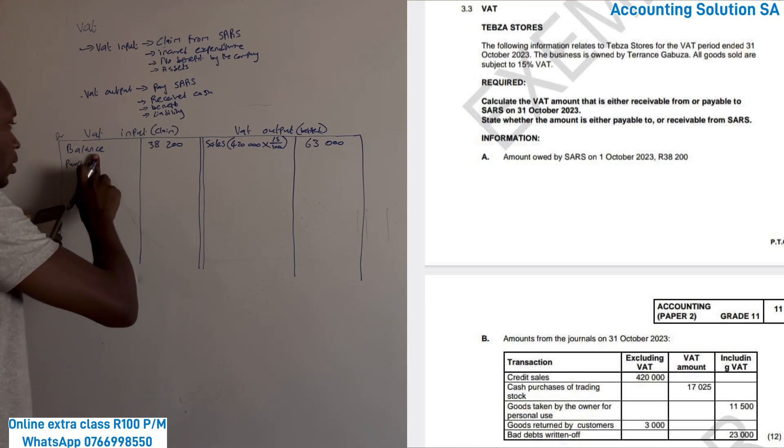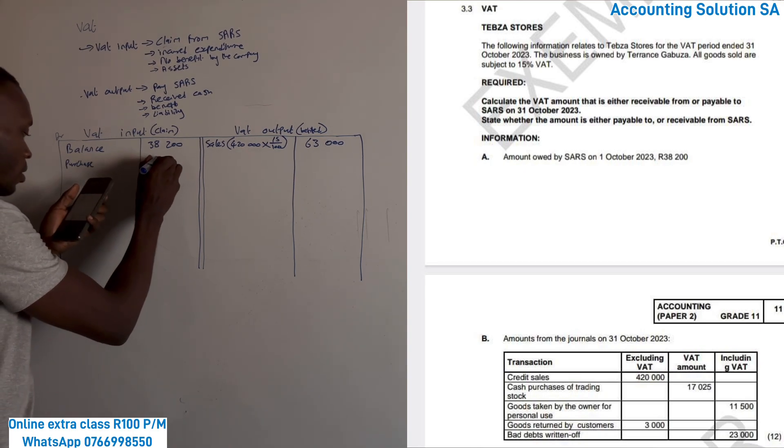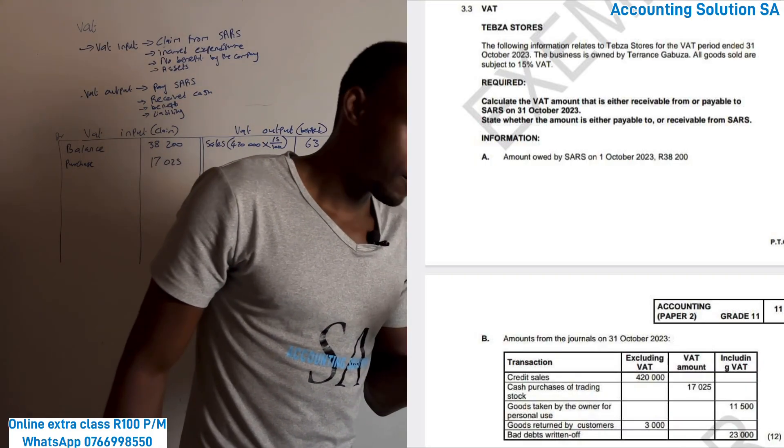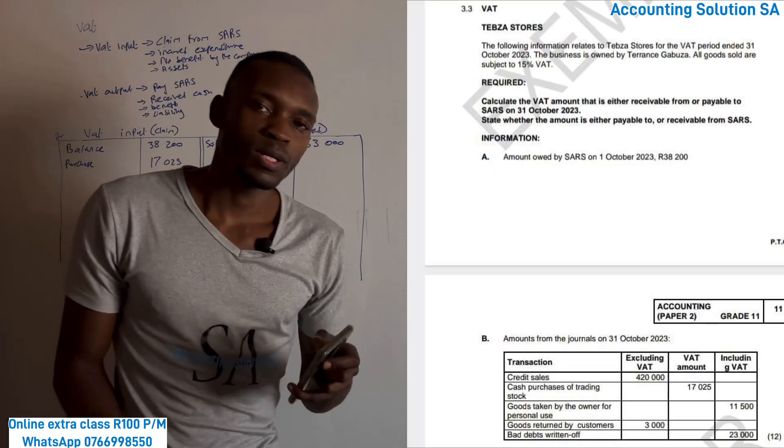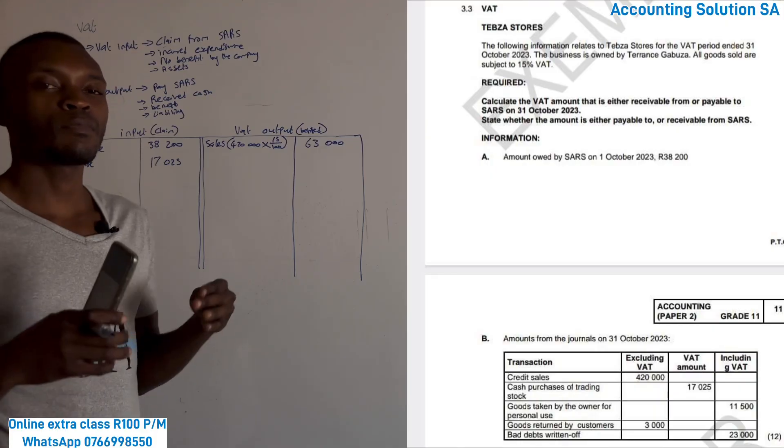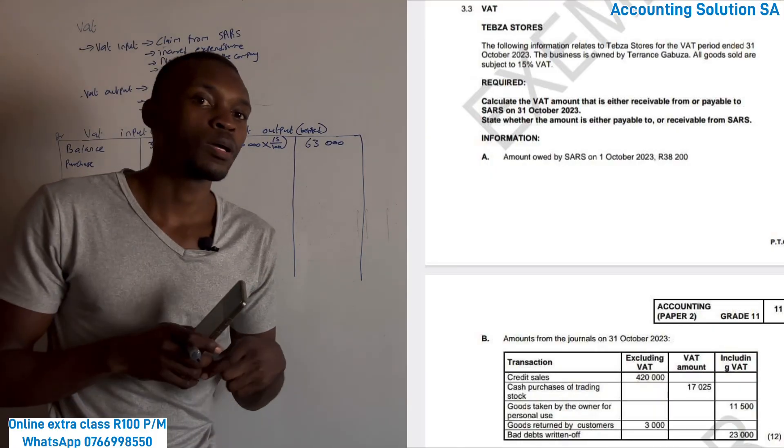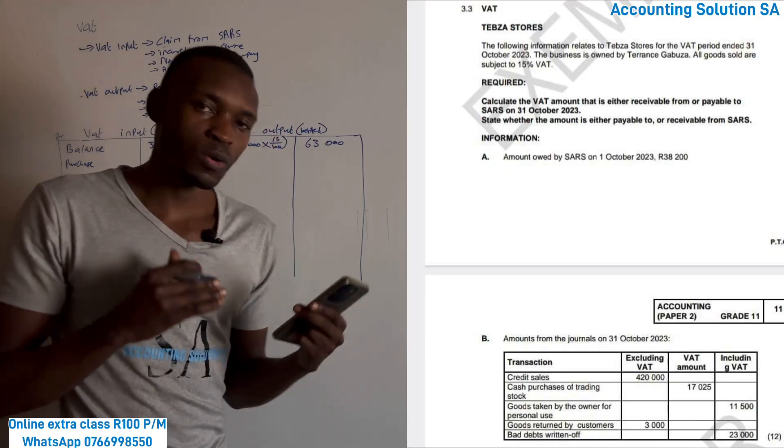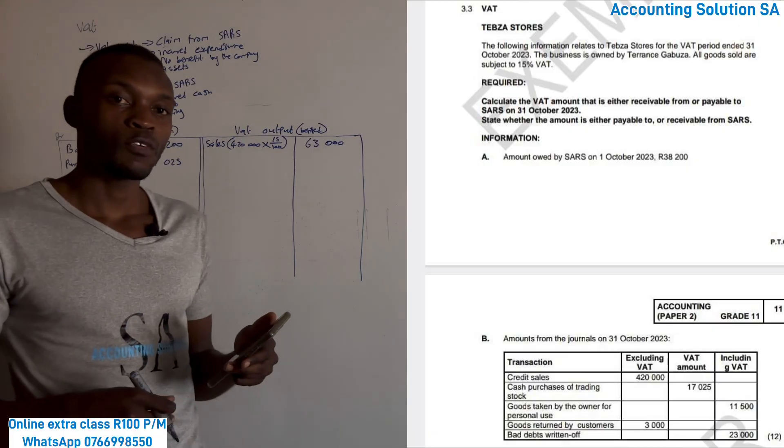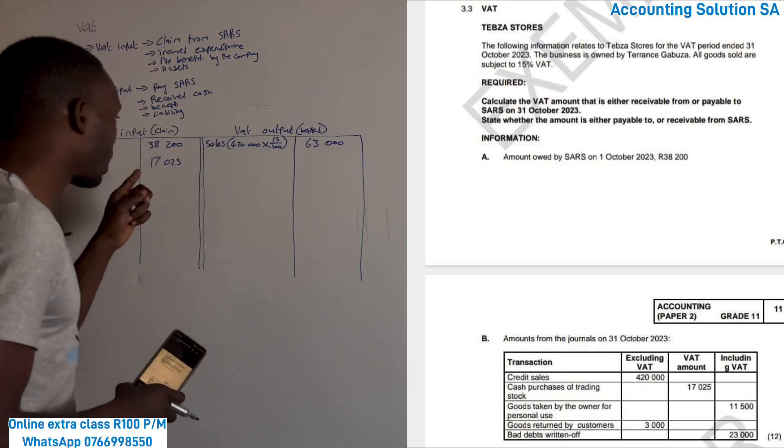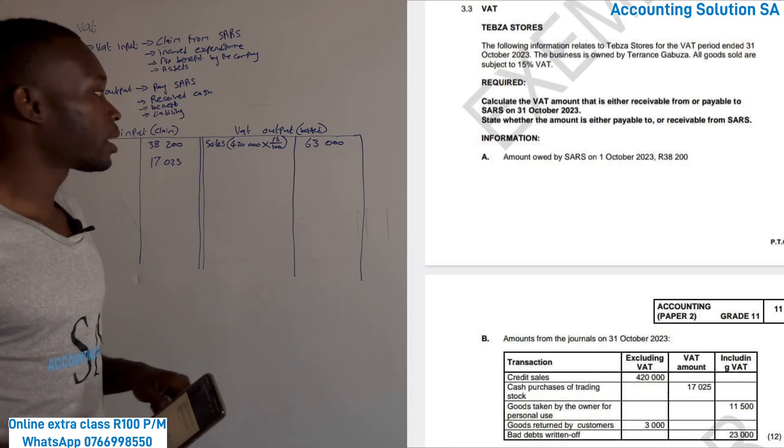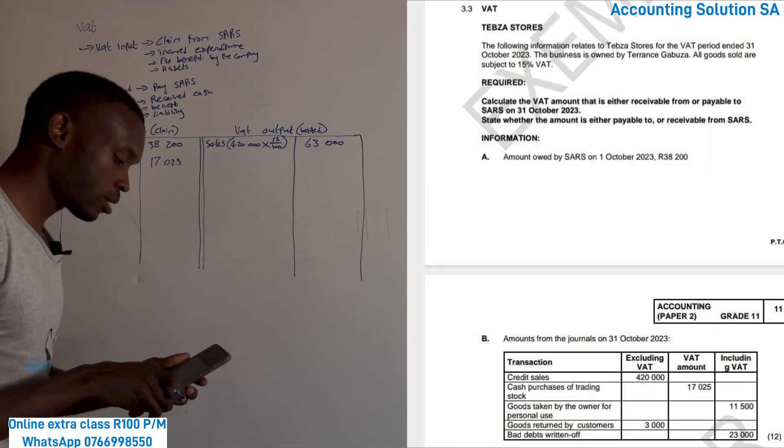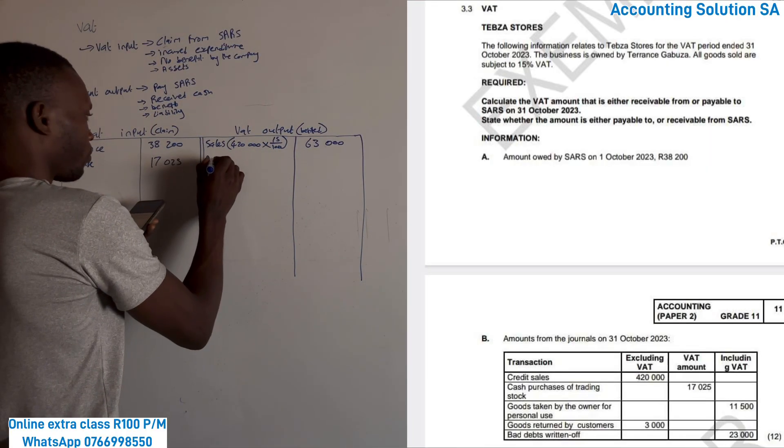Goods taken by the owner for personal use. Is there any benefit from the company or the owner? Yes. Remember the owner took goods for personal use. He's going to benefit from using those goods that we already claimed VAT. Which means we regard it as he has benefited and we have to put it this side. It's going to be drawings.